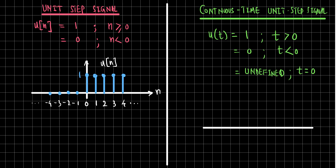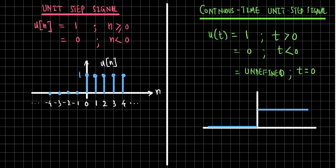If we try to plot this signal, we see that it is one for all values of t greater than zero and zero for values of t less than zero. The horizontal axis is t and the height is one. You can see that this signal undergoes a sudden change in value, therefore this value at t equals to zero is undefined.